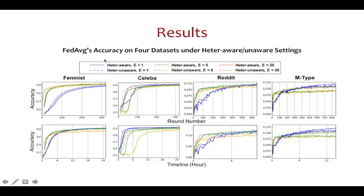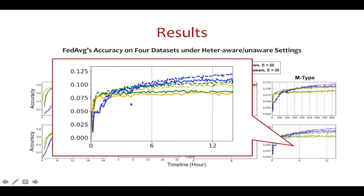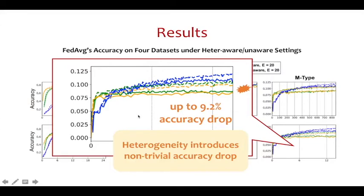We run FEDAVG on four datasets and compare their accuracy under heterogeneity-aware and unaware settings. Like previous work, we also vary the local training epochs, illustrated in different colors of curves. We can observe that heterogeneity brings a significant accuracy drop on all datasets. On the MTAP dataset, which is a real-world input text dataset collected from our input method application, the accuracy drop is up to 9.2%, indicating that heterogeneity introduces non-trivial accuracy drop to FL algorithms.